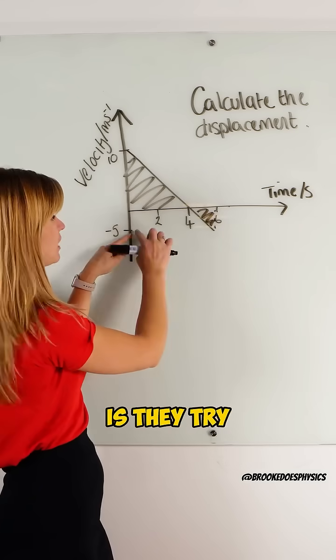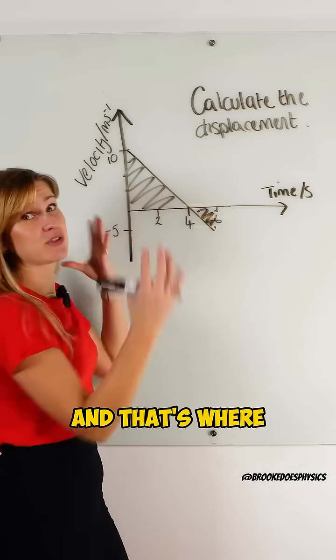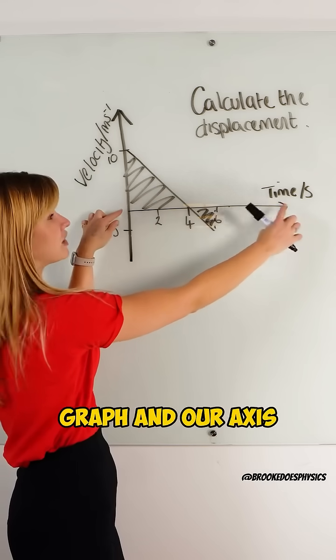What people mostly do wrong is they try to make a big triangle here and that's where they went wrong, right? Because it's between the graph and our axis.